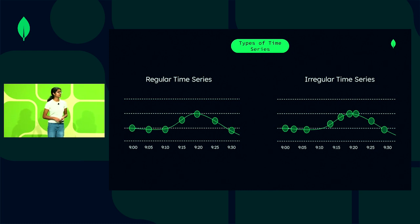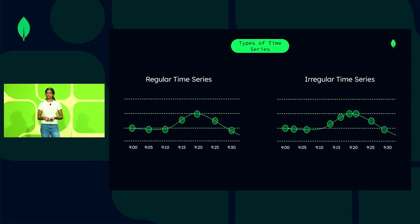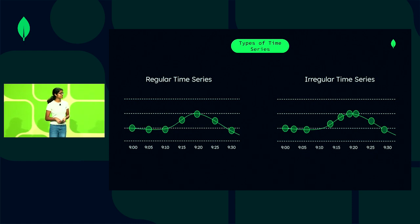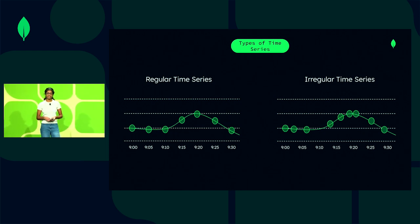There are two types of time series: regular and irregular. With regular time series, data is collected at fixed points in time — for example, getting temperature from a sensor every five minutes, or pinging a server for CPU information every 10 seconds. With irregular time series, data is collected at uneven points in time, or rather whenever an event occurs — for example, logging application request responses from an application's APIs.